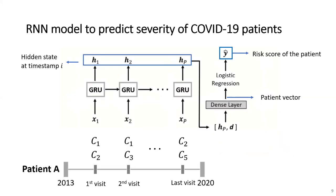Going further with that idea, we developed an RNN model to predict the severity of COVID-19 patients. We used a Gated Recurrent Unit, also known as GRU, which is a kind of RNN variant that takes COVID-19 patients' EHR data as inputs and outputs the hidden state of the patient. We then generated the patient vector by feeding the last hidden state, along with a demographic information vector, to a single neural network layer. To obtain a risk score between 0 and 1, we apply logistic regression to the patient vector.